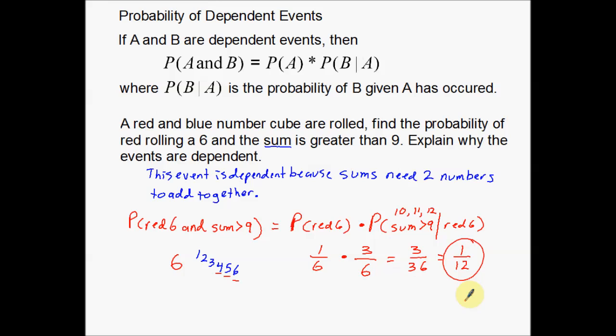So one out of every 12 tosses of the two number cubes will give me a red six and a sum greater than nine. That's an example of dependent events. Remember, dependent means they depend on one another — the sum greater than nine depended on both cubes because you need both numbers to get that sum. That is the probability of dependent events. Thank you for watching, and we'll see you next time.